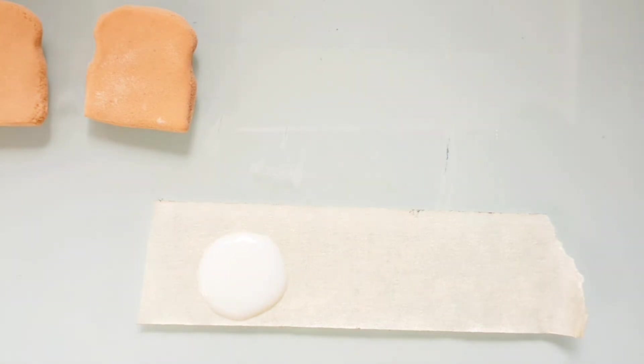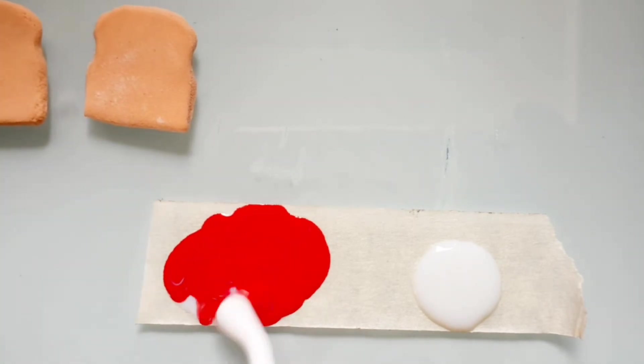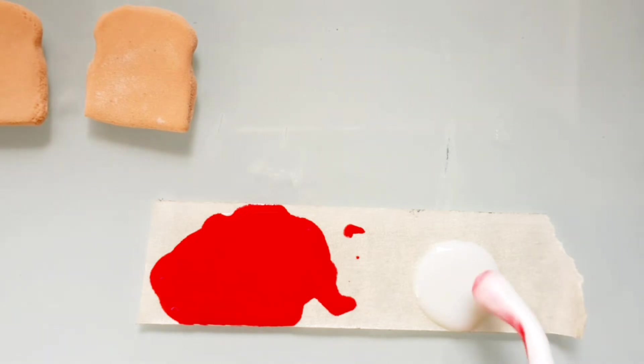Now take some red color or any other color you like and mix it with one part and put it on one bread. It will form the jelly. You can use red, blue, or purple, or you can also make marmalade.